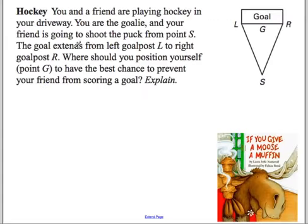In hockey, this is really similar to the soccer example I gave. It says you and your friend are playing hockey in your driveway. You are the goalie and your friend is going to shoot the puck from point S. So your friend, maybe his name is Steve, is going to shoot this puck. The goal extends from the left goal post to the right goal post. Where should you position yourself if you're the goalie to have the best chance to prevent your friend from scoring the goal? Well, mathematically, you're going to be right in the middle. This is you, equidistant from both the left and the right goal post. If it was me, I would probably charge Steve. Steve is someone who gets psyched out a lot. If you were to charge him, you'd probably mess up and slip on the ice and fall down. And then you can spend the rest of your day just reading if you give a moose a muffin.